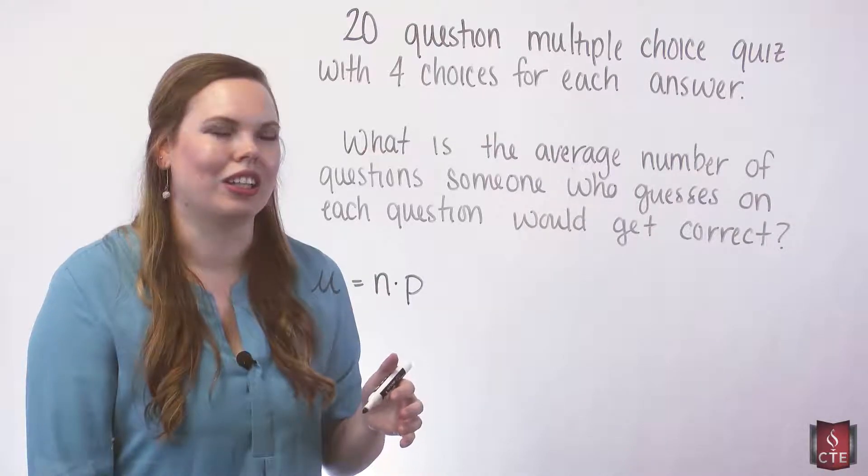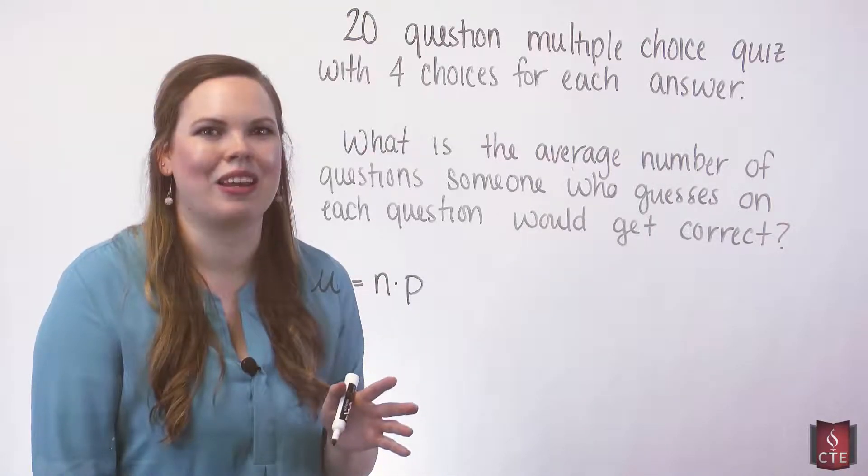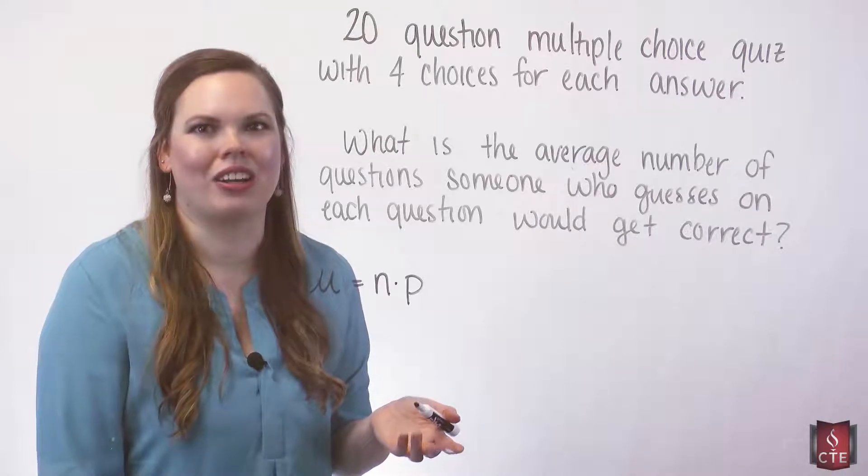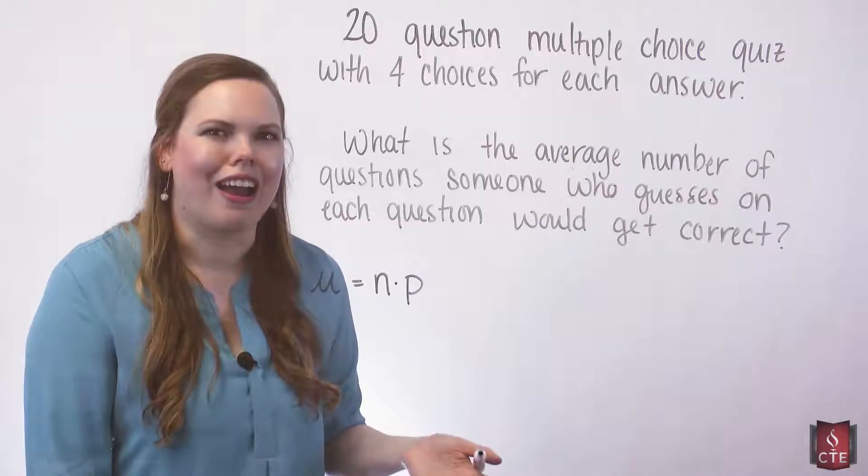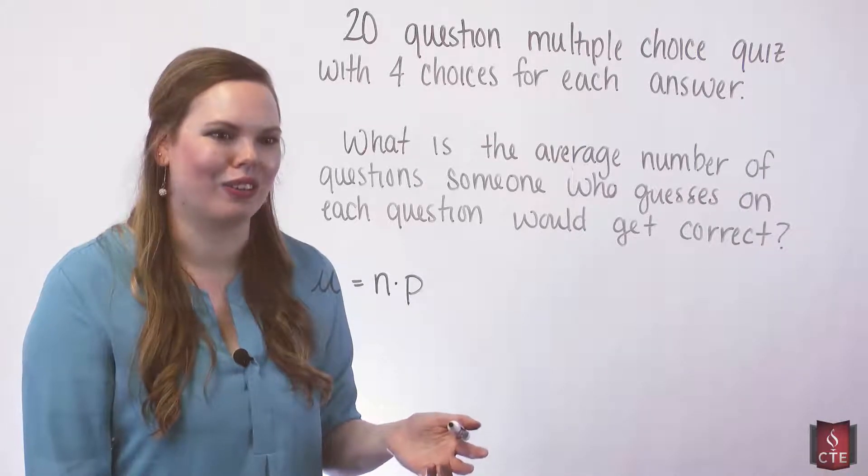So they're taking this 20-question quiz, they have no idea, and maybe they use a random number generator and guess on each question. How many, on average, questions would they get correct?